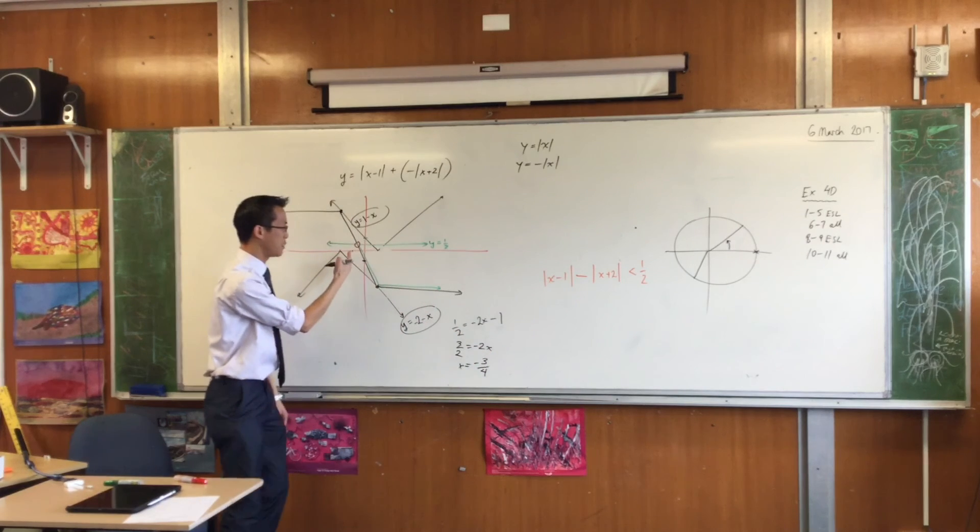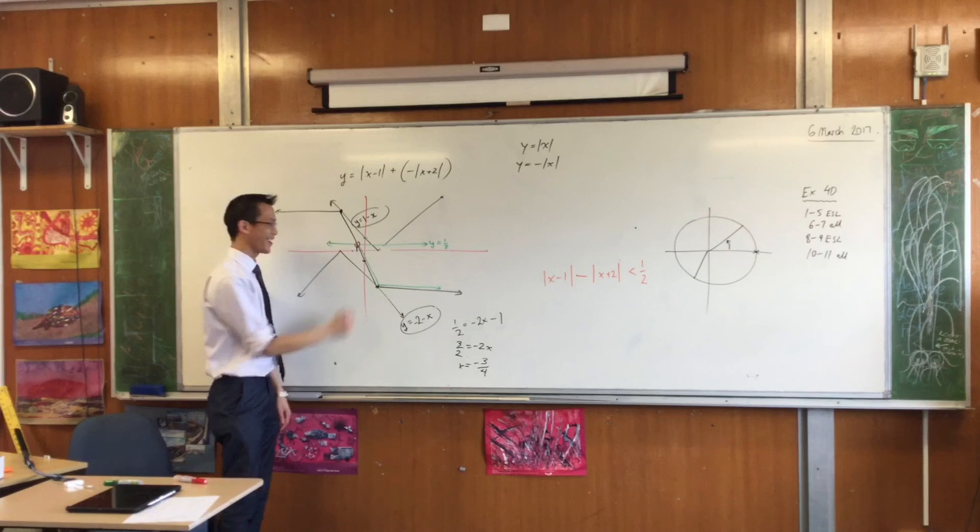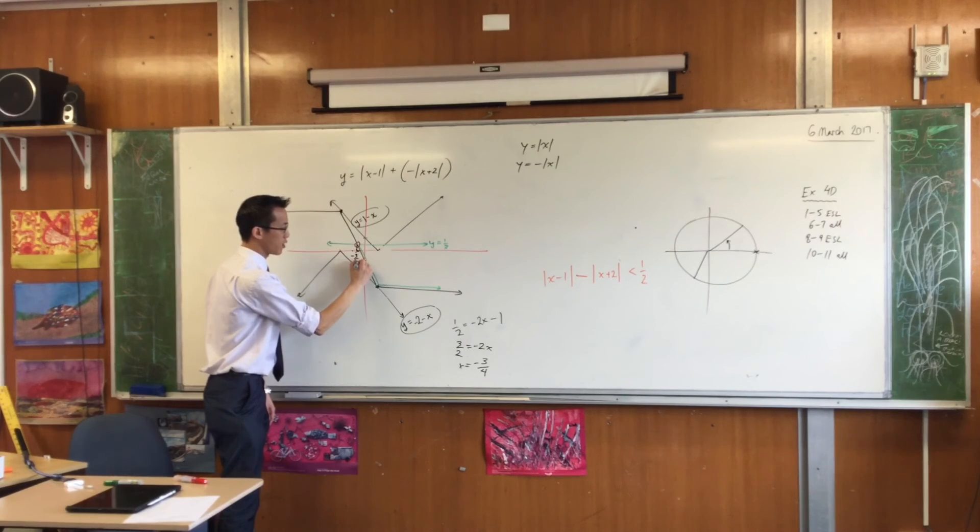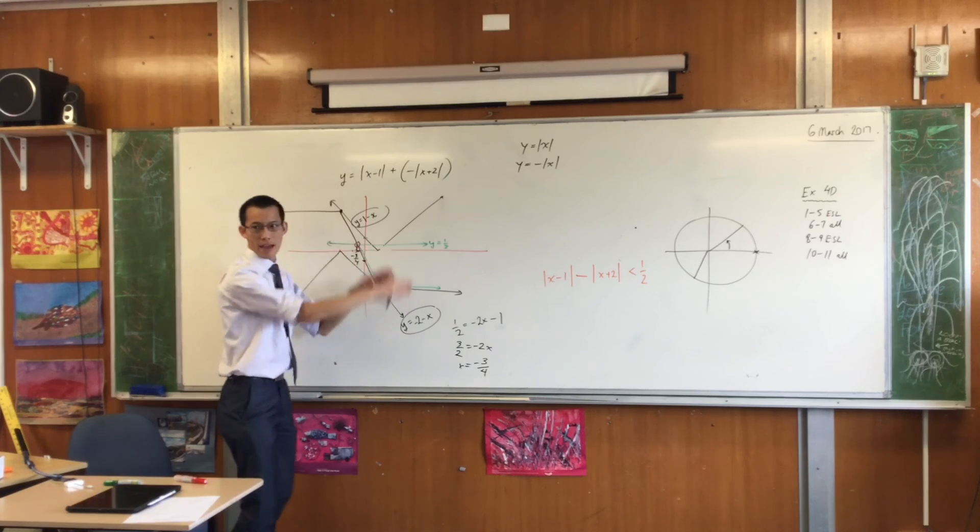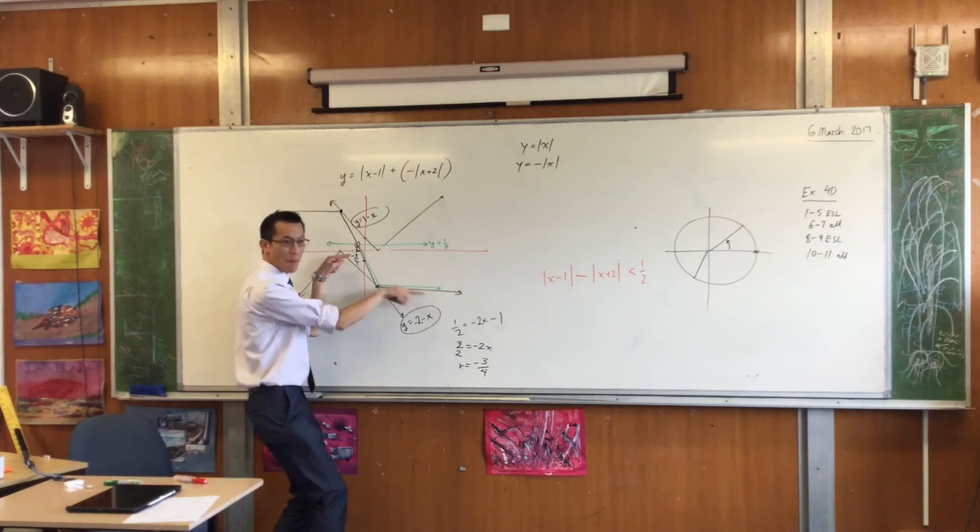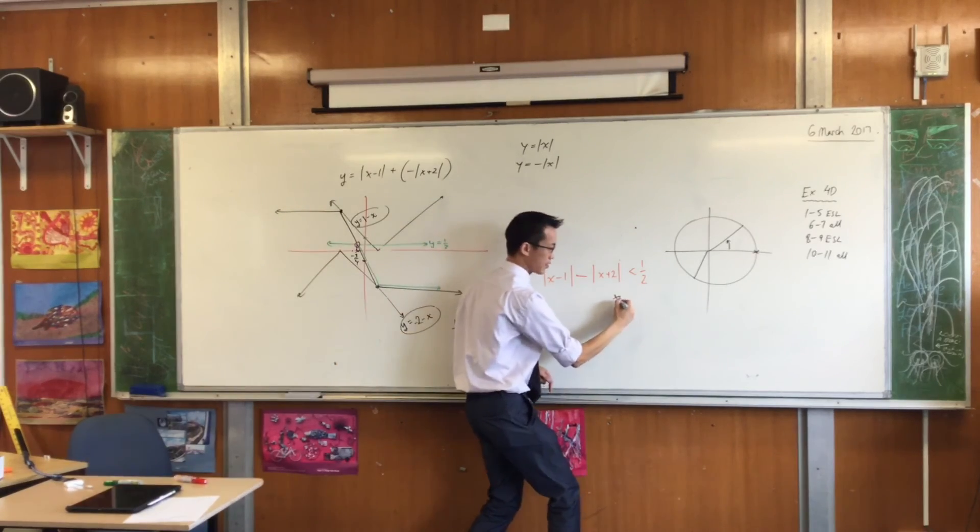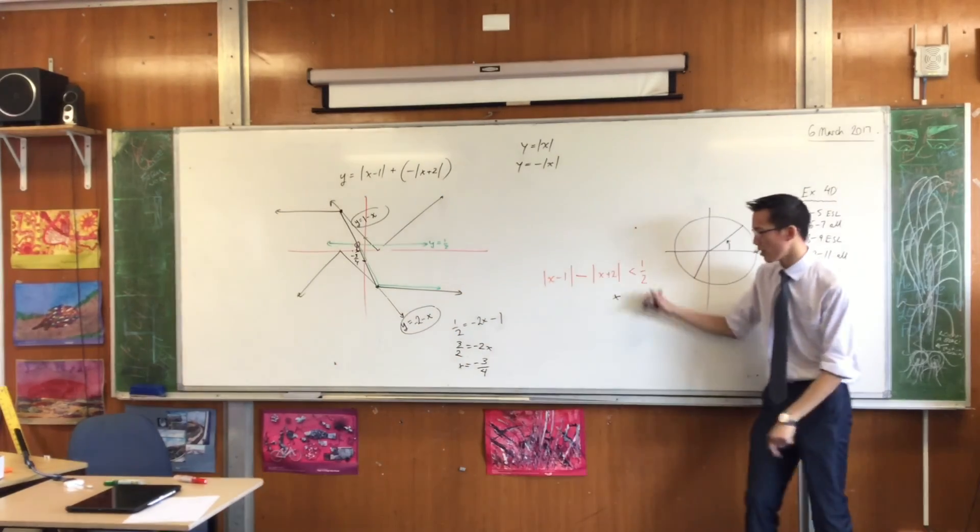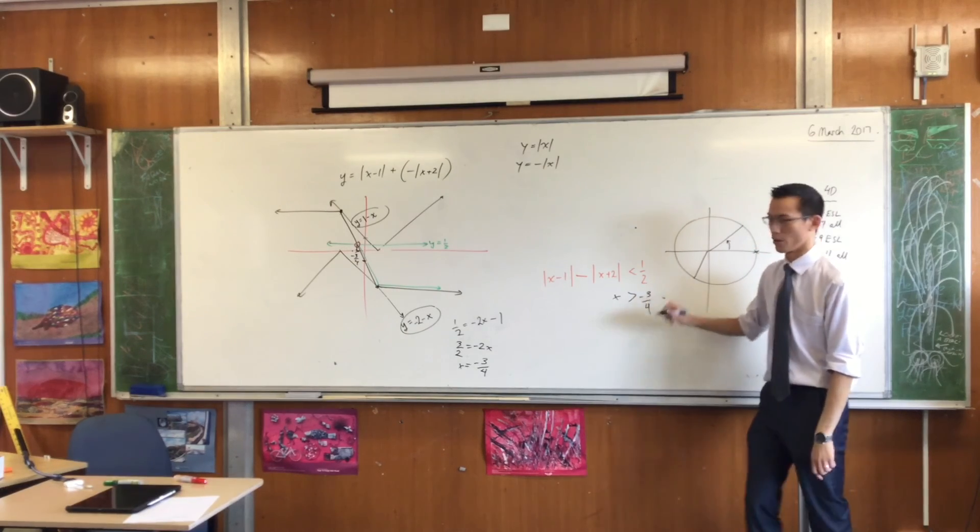Does it look like it should be negative 3 quarters? Yeah, not bad. So if that is negative 3 quarters, that's the boundary value, am I going to the left or am I going to the right? I'm going to the right, because, look, these are the bits that are below the green line. So x is, if it's to the right, greater than negative 3 quarters and I'm home.